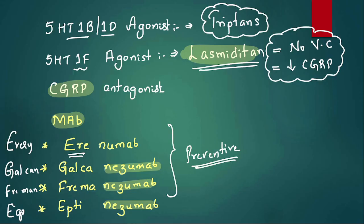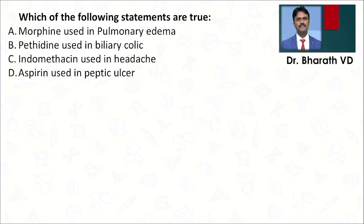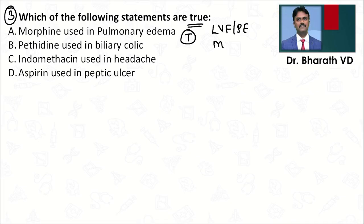Moving to the third question: which statements are true? Morphine used in pulmonary edema — yes, true. Morphine can be used in left ventricular failure, pulmonary edema, and MI, and it's used in cancer pain. Pethidine used in biliary colic — true. Pethidine is used in biliary colic because it has anticholinergic, antispasmodic properties.